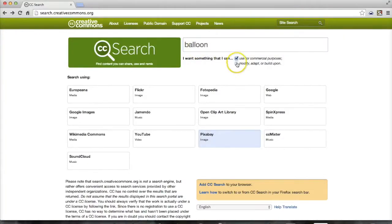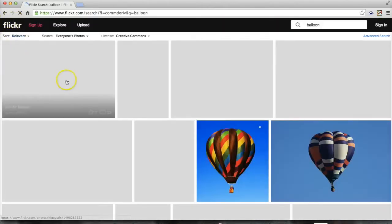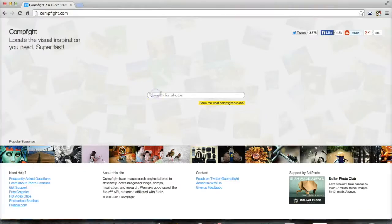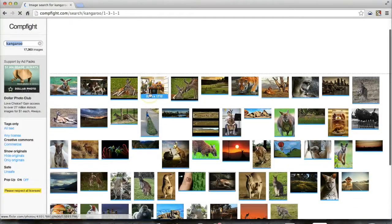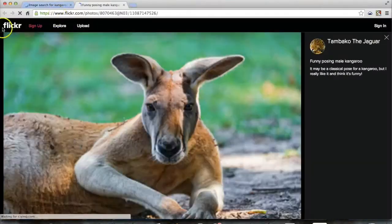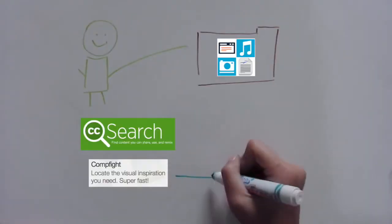Creative Commons Search is a great site for you to search for different types of Creative Commons work because they connect with all these different CC-supportive sites. Compfight is great for searching up images with CC licenses because they link and show work from Flickr.